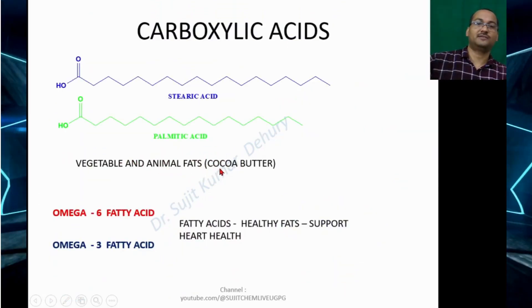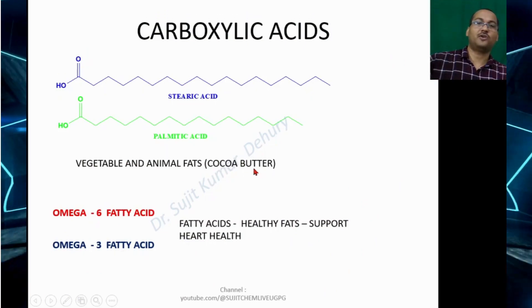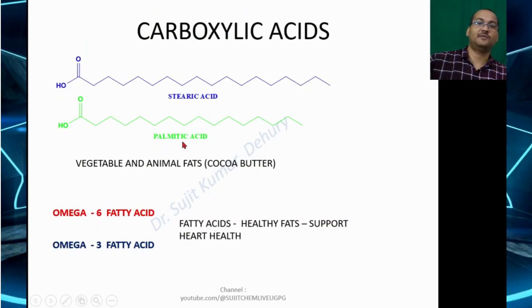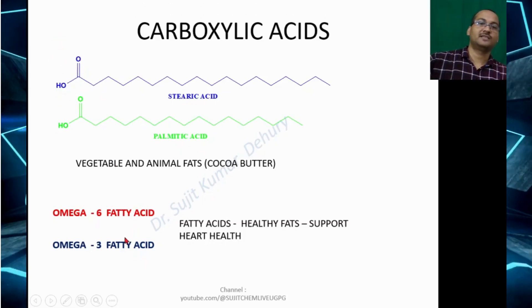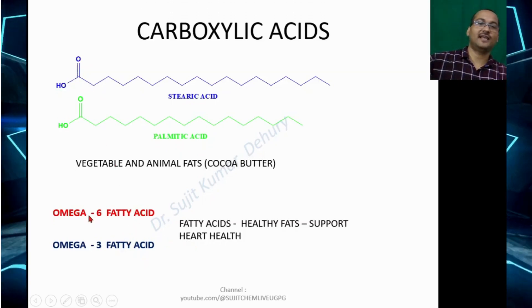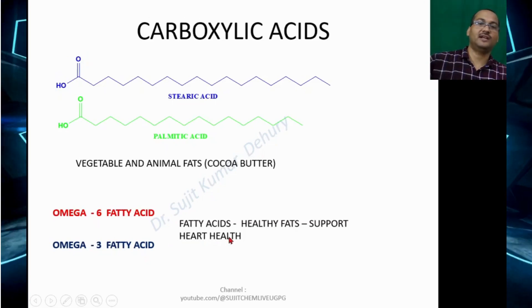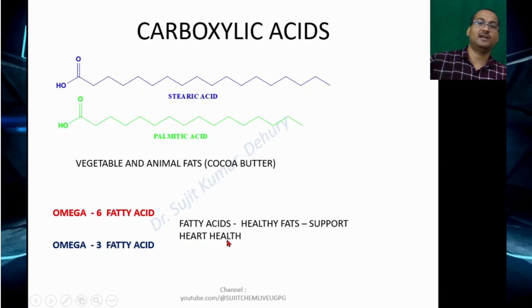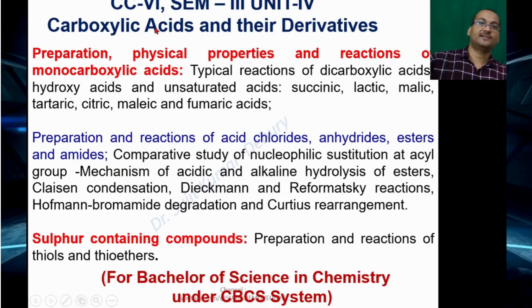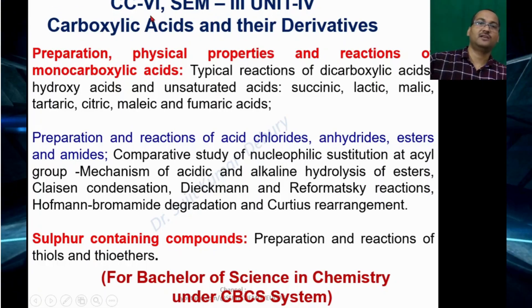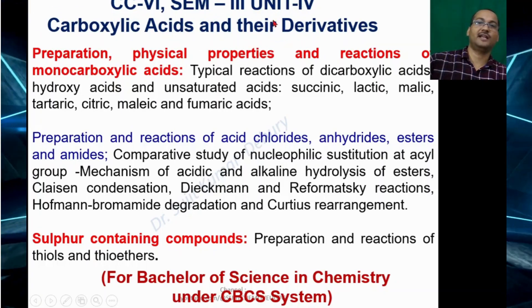Vegetable and animal fats like cocoa butter contain stearic acid and palmitic acid, which also contain carboxylic acid groups. Fatty acids like omega-6 and omega-3, known as healthy fats, support our heart health. This topic is covered under semester 3, CC6, unit 4: carboxylic acids and their derivatives.